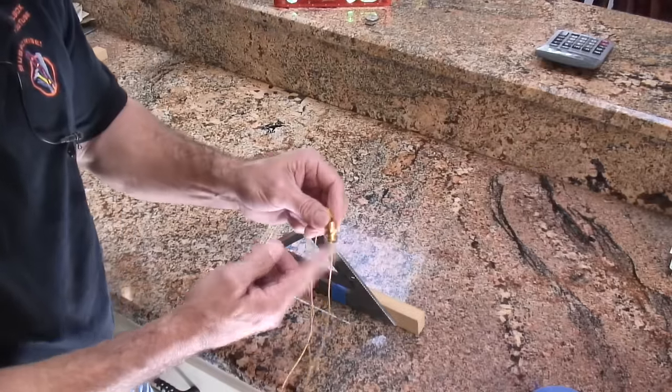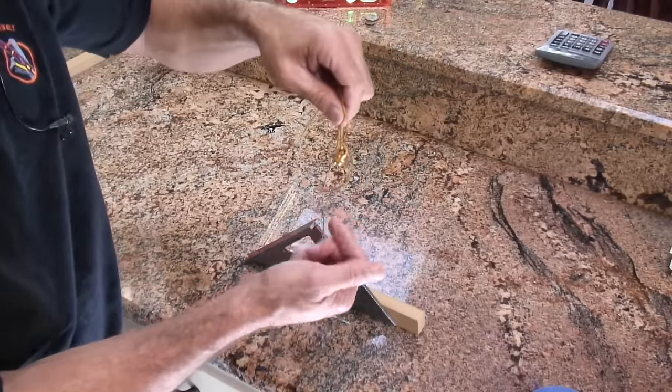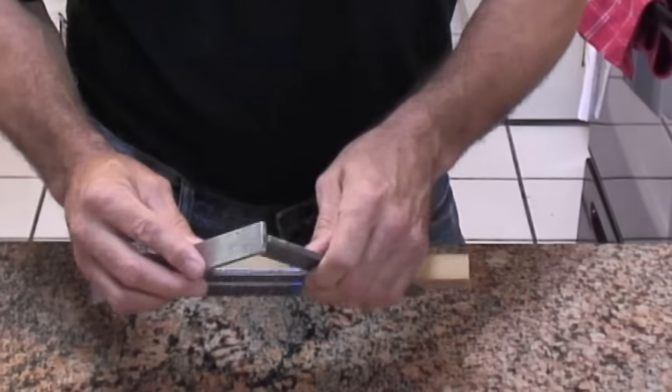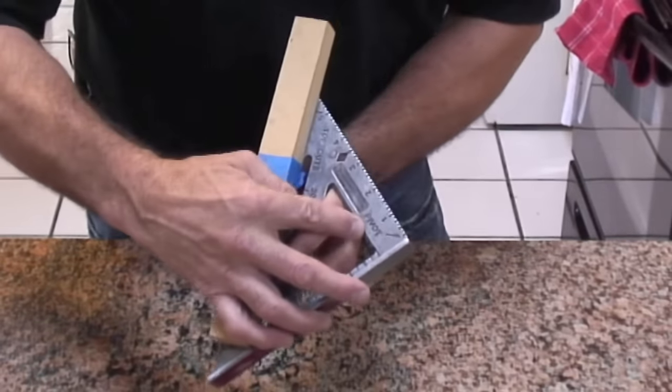You'll take a piece of string and you can tie a nut onto it or you can tie a nail onto it. Anything that can work as a plumb bob that has a little bit of weight to it. On the Speed Square, you will see a little notch right here. And there's a word pivot.